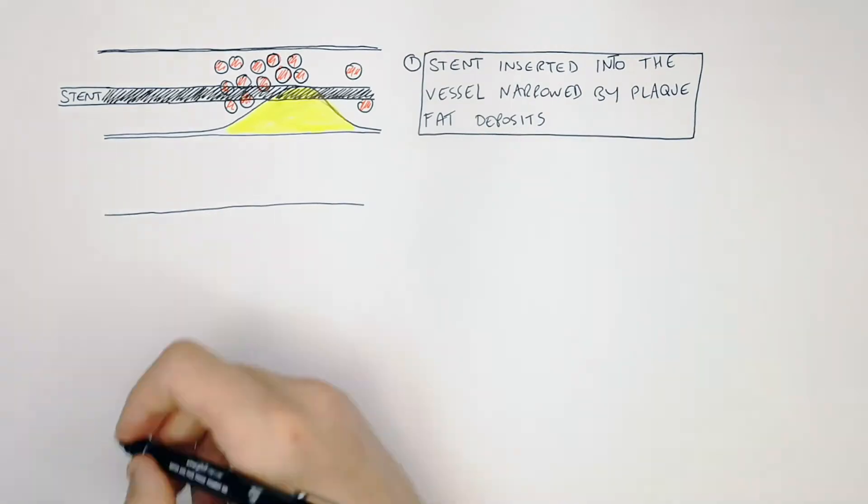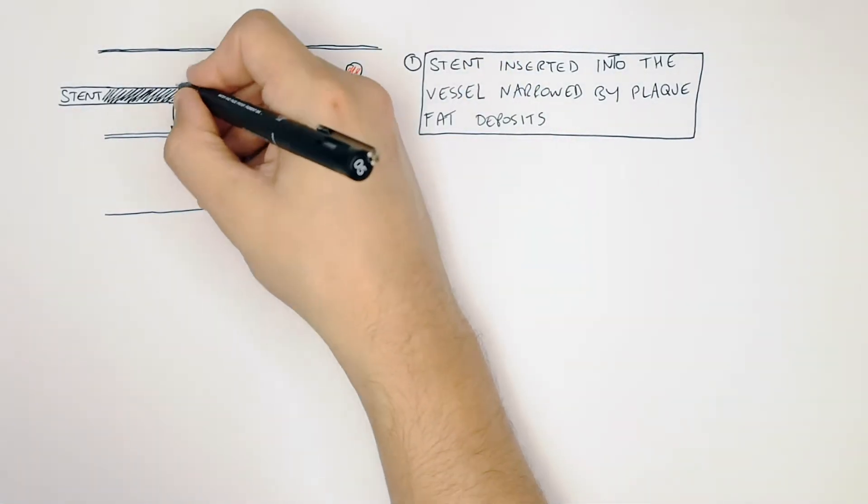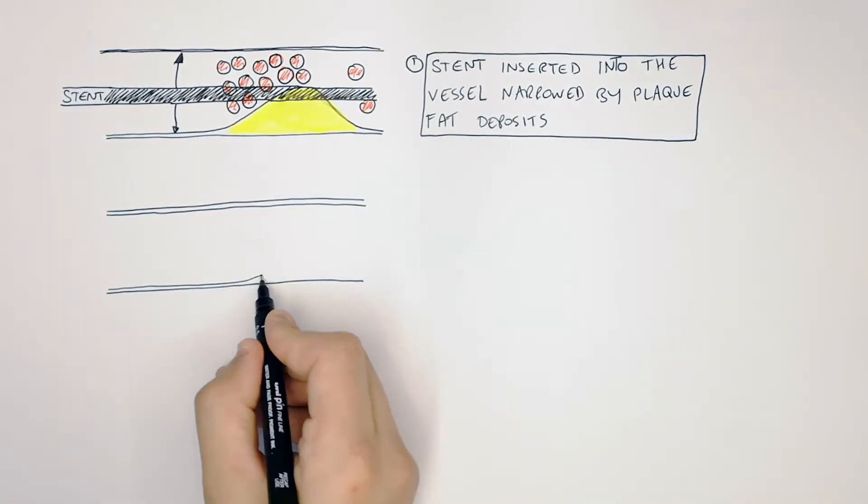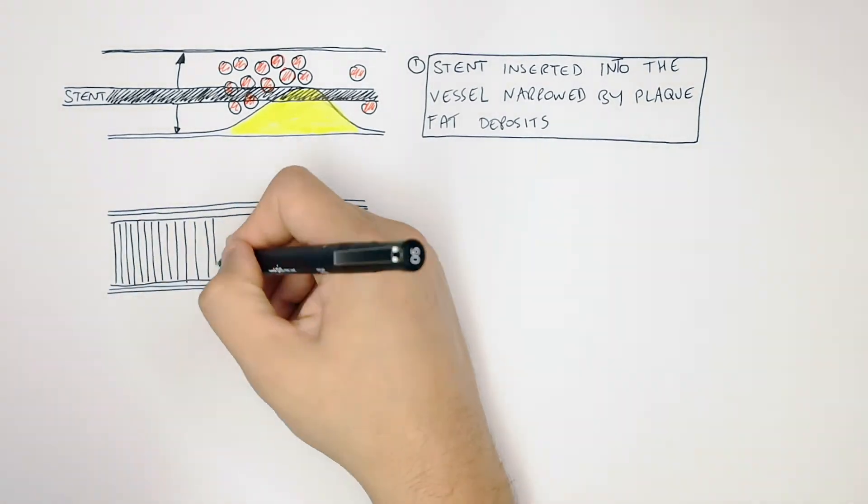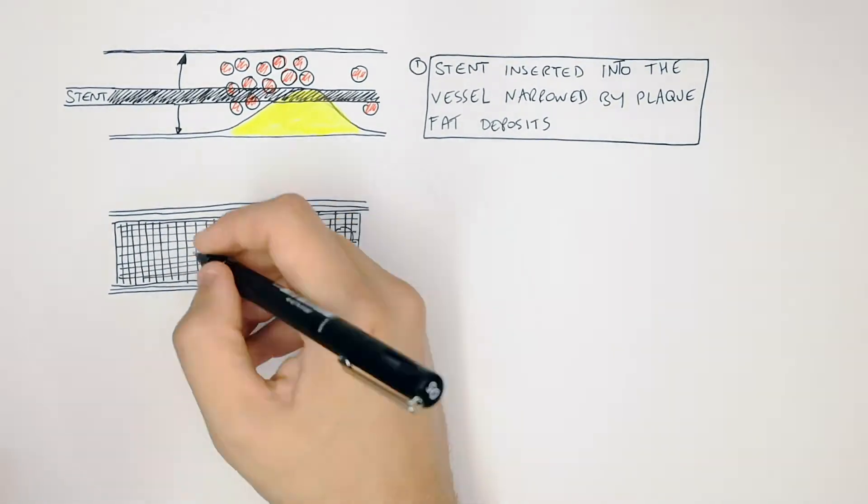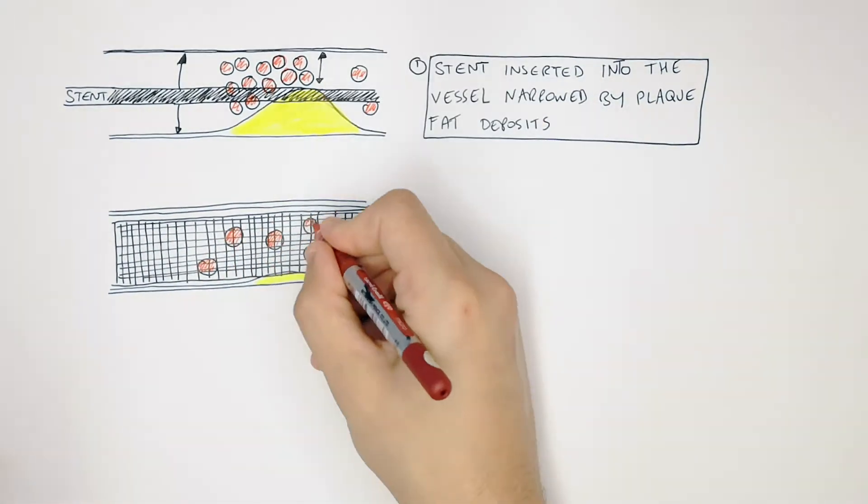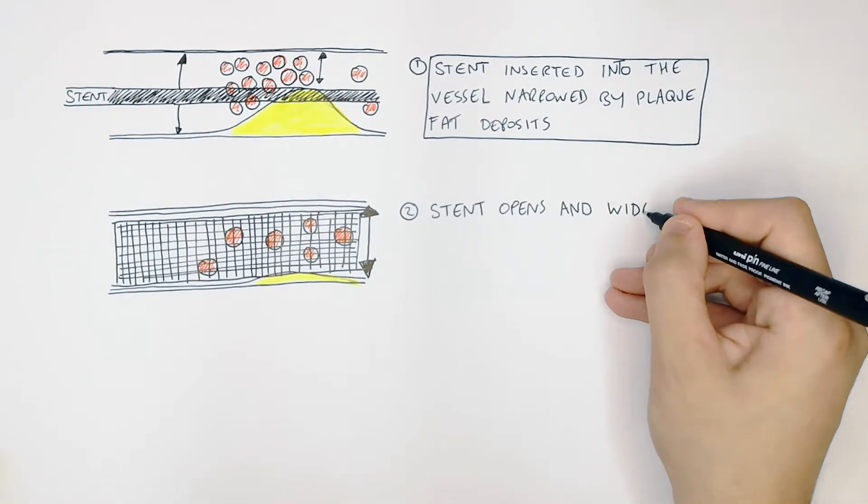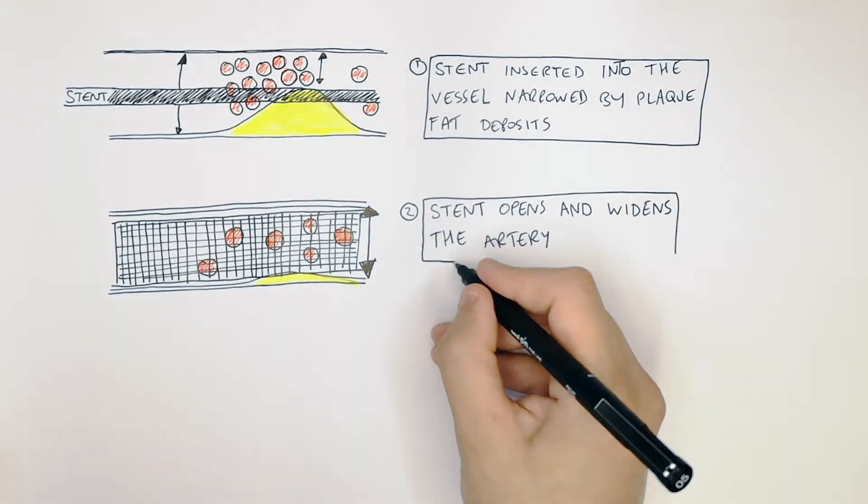Then what the doctors will do is expand the stent, which is like a meshy wire-type material. So the stent opens and widens the artery.